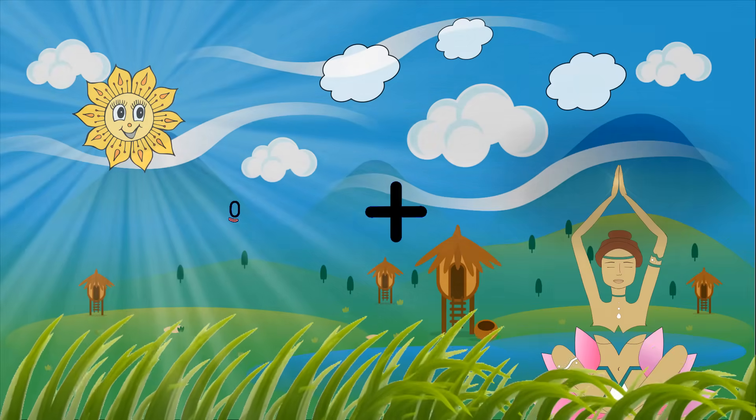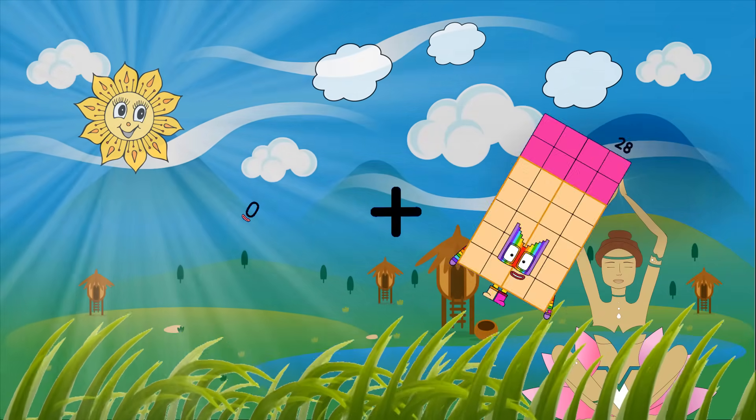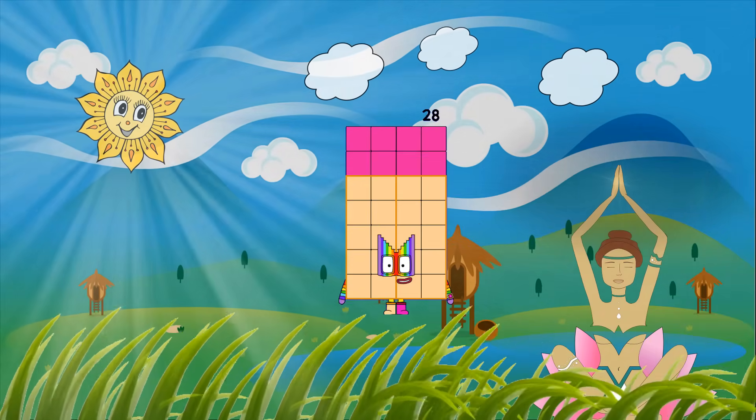Zero plus twenty-eight equals twenty-eight.